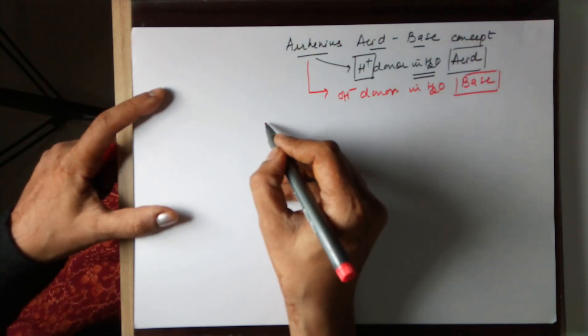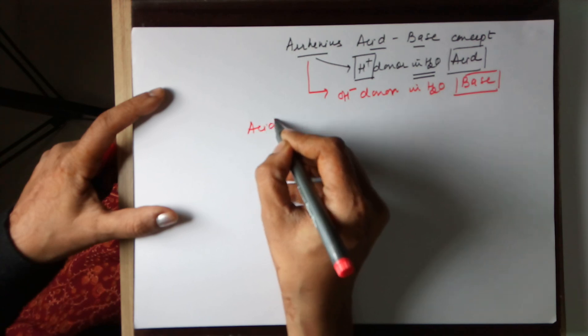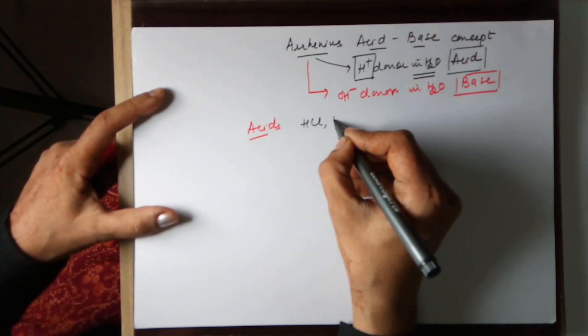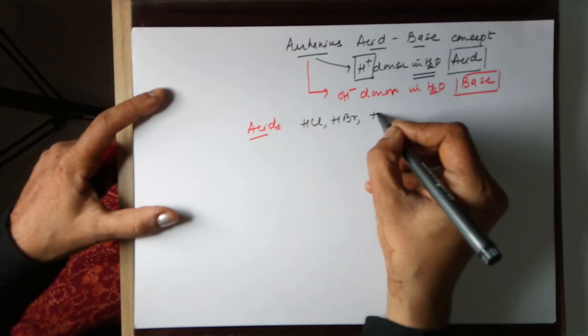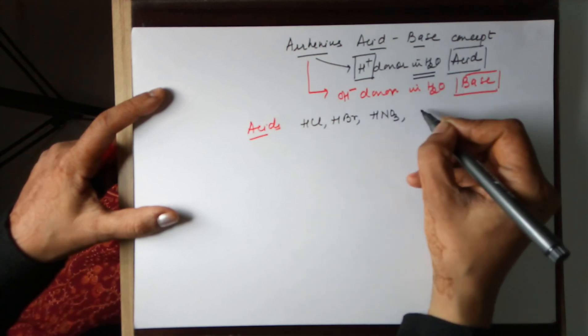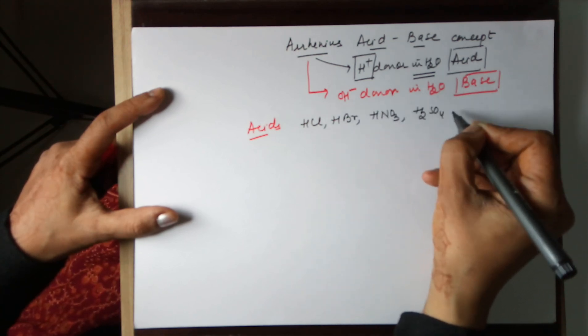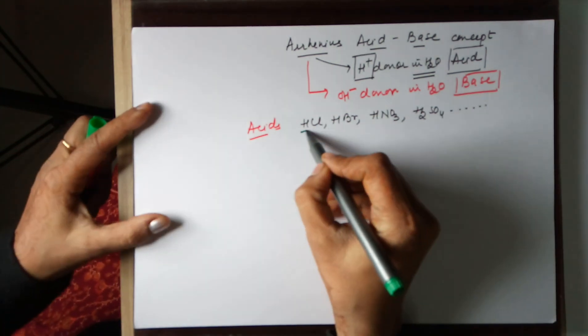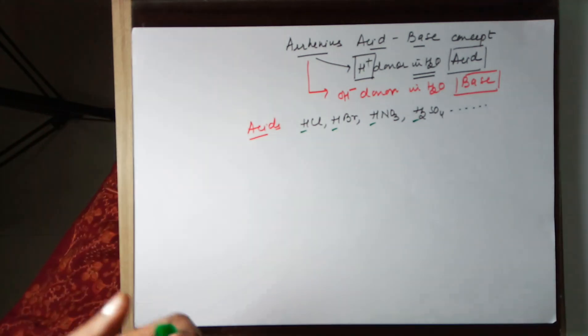Hence, anything which has a proton is called an acid. Examples of acids would be HCl, HBr, HNO3, H2SO4—the mineral acids. The reason being they are capable of donating a proton.